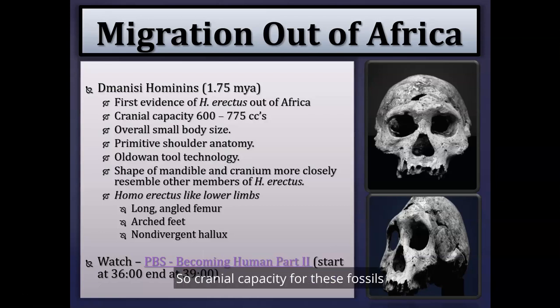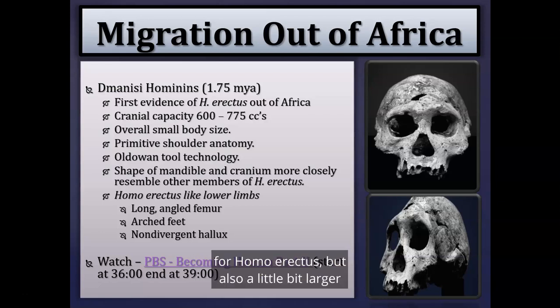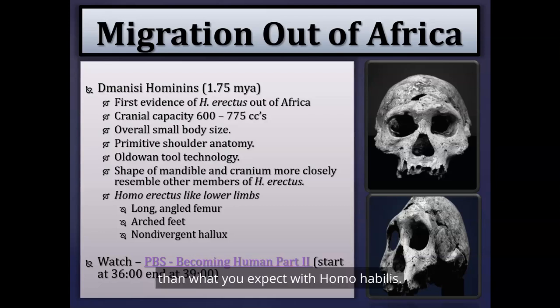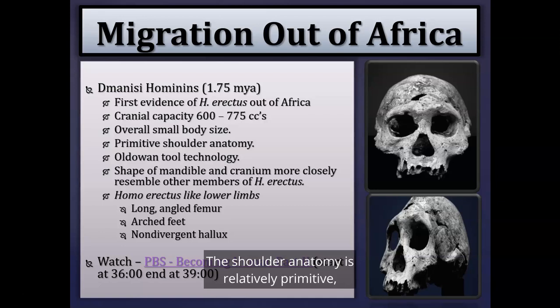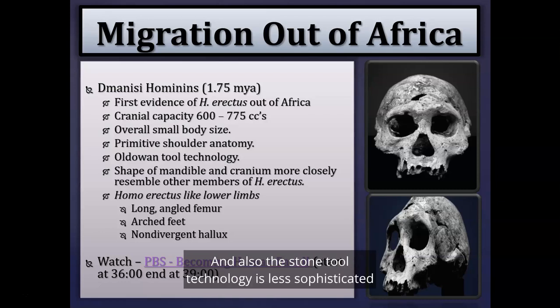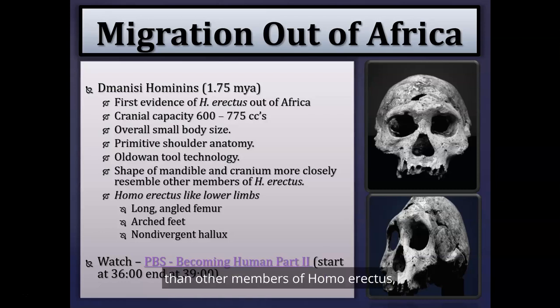Cranial capacity for the Dmanisi fossils is about 600 to 775 cc, a little lower than expected for Homo erectus but a little larger than Homo habilis. From the neck down, the post-cranial anatomy is relatively small. The shoulder anatomy is relatively primitive, more similar to Homo habilis, and the stone tool technology is less sophisticated — more Oldowan-type tools.